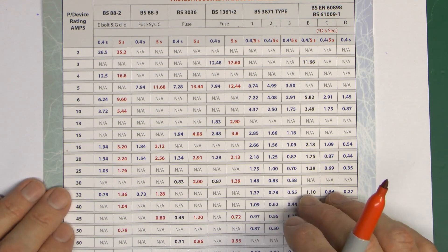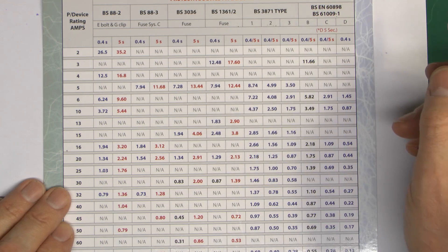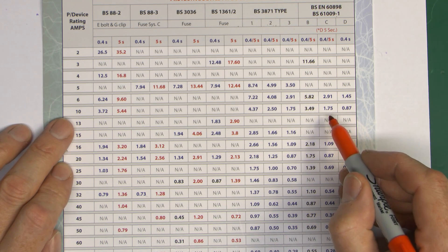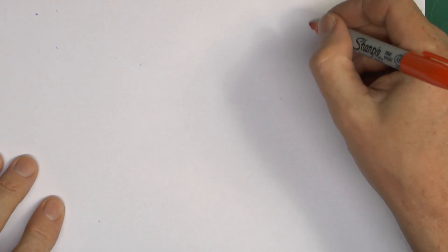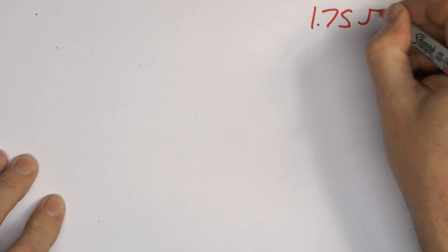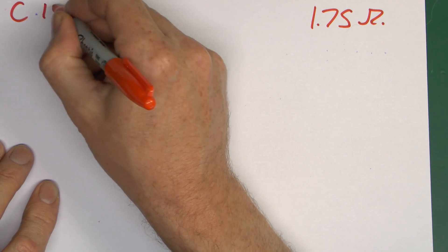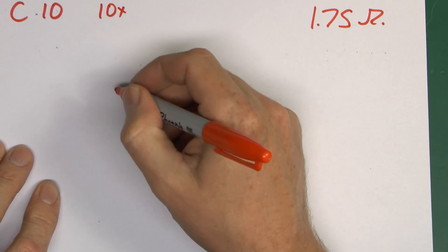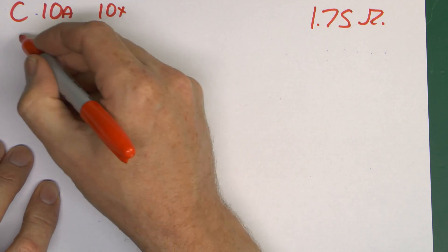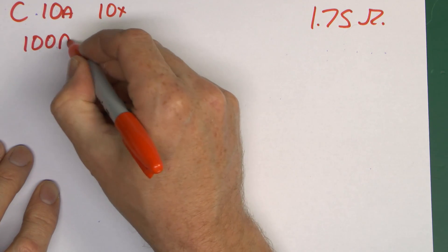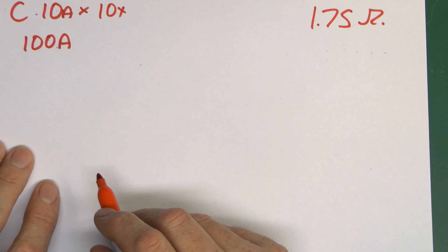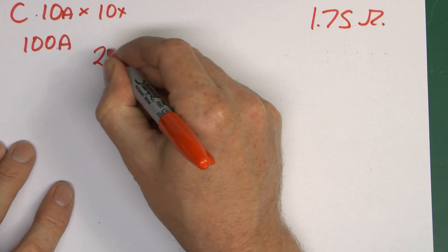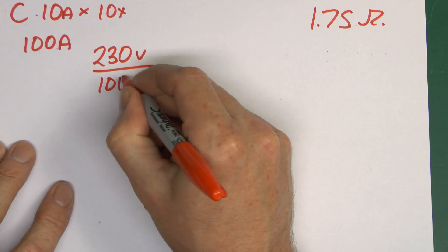Now I'll just do another one of these calculations quickly here, just to demonstrate that. This time, let's say it was a Type C, and this time it was a 10A circuit breaker. So Type C, 10A, so it should be a value of 1.75. So 1.75 is what it's supposed to be. So a Type C, and it was a 10A. Now Type C is tripped between 5 and 10 times, so we're going to assume it's going to be the 10 times, and the current there was 10A. So the current we're going to need is going to be 100A, which is basically 10 times 10.